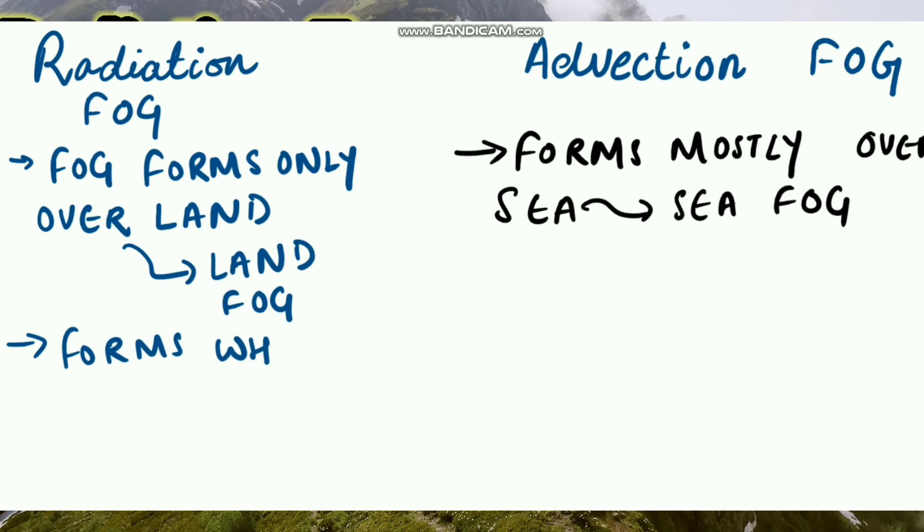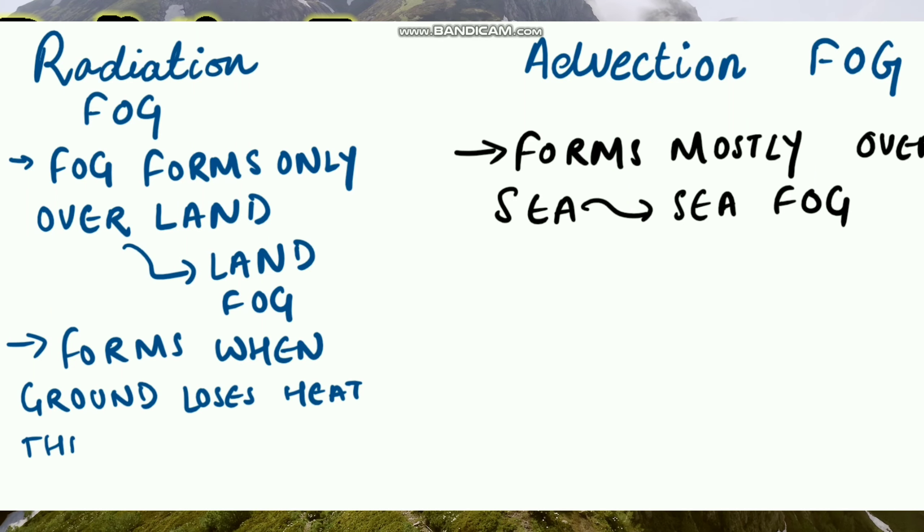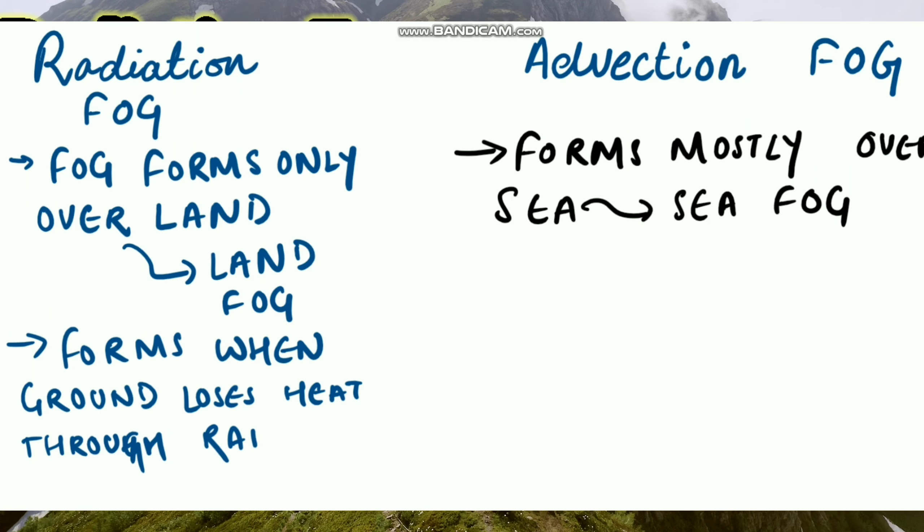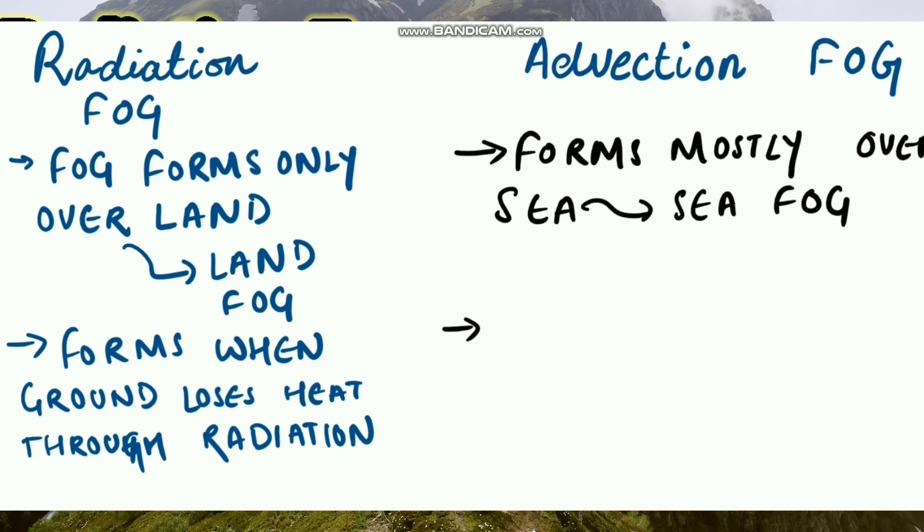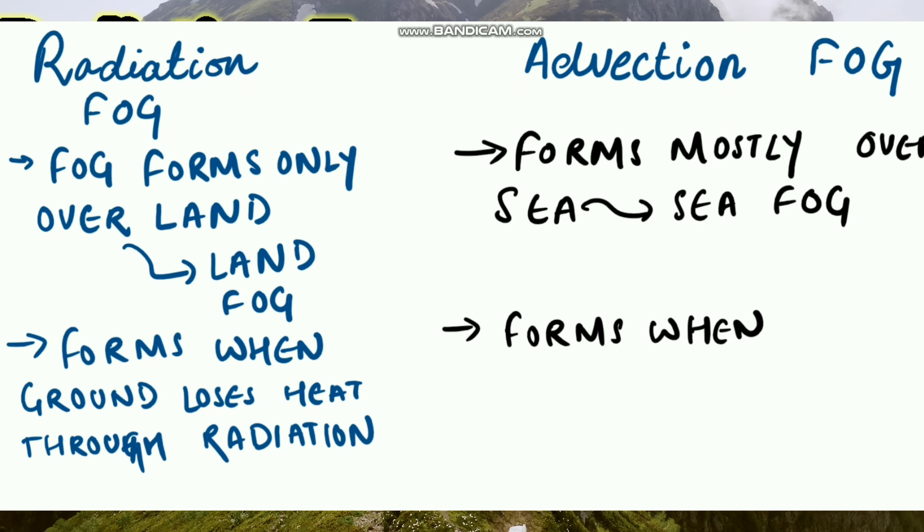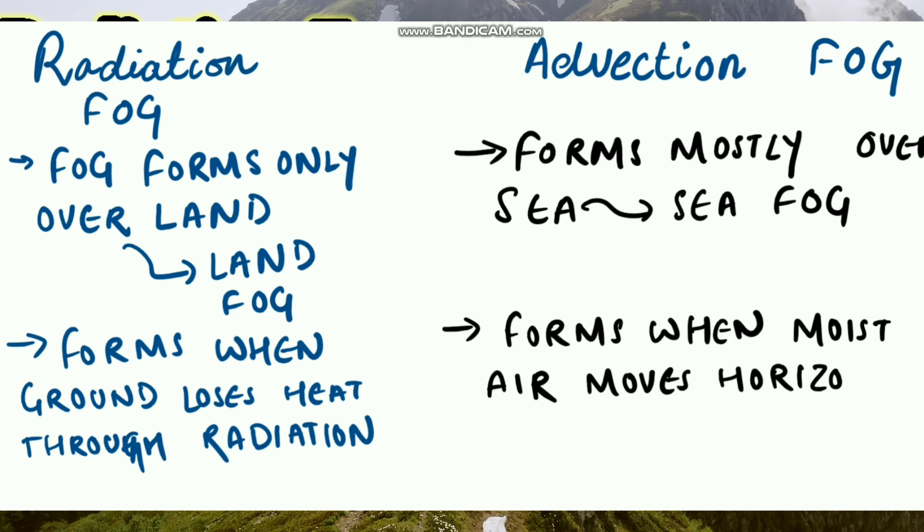Radiation fog forms when ground loses heat through radiation, whereas advection fog forms when moist air moves horizontally over a colder surface.